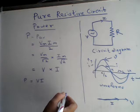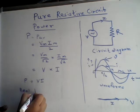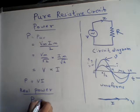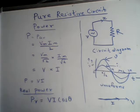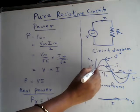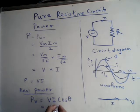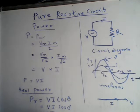Now considering real power PR, this is equal to VI·cosθ. We know that there is no phase difference between current and voltage, so the phase difference θ is zero. Therefore PR = VI·cos(0) = VI·1 = VI. The real power is given by VI, which is also called apparent power.